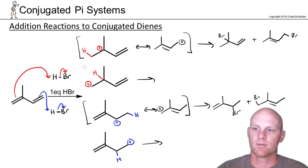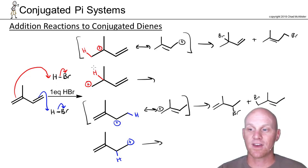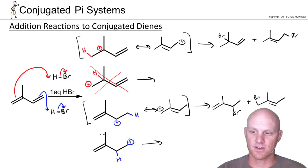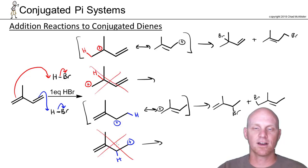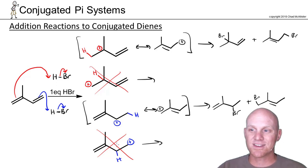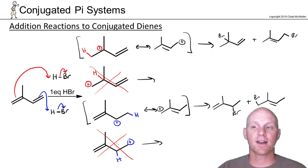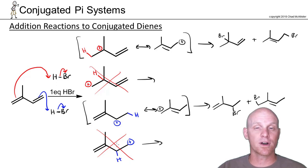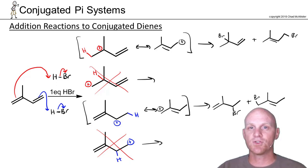Because the resonance-stabilized cations are more stable than those that aren't, we don't even need to consider the non-stabilized ones — the major synthetic route won't go through them. The first step is to determine which of the four possible carbocations is the major synthetic route. We've already ruled out two, so let's take a deeper look at the two resonance-stabilized cations.